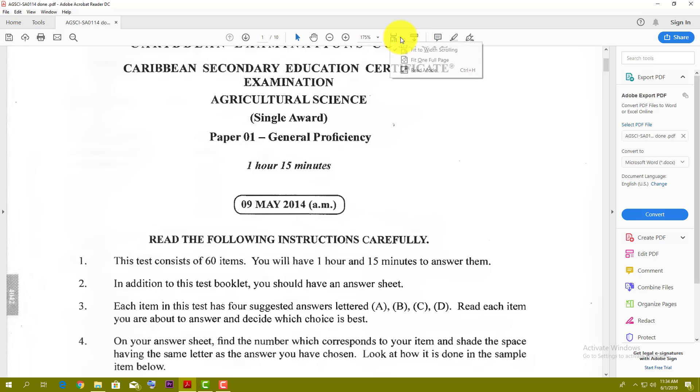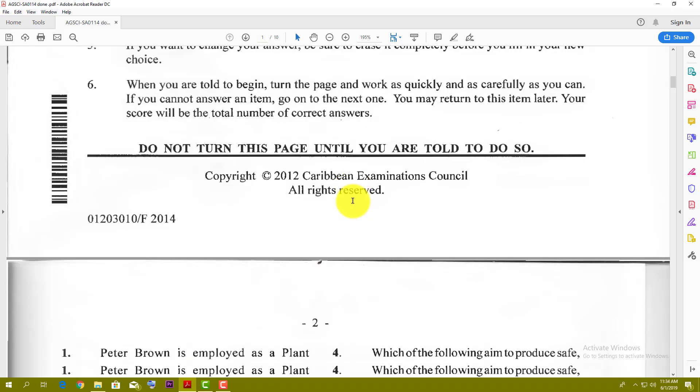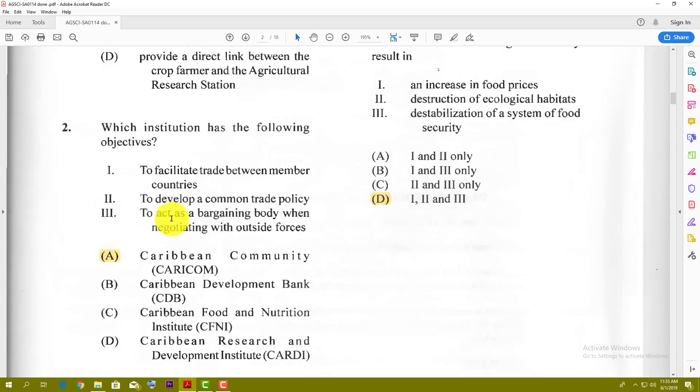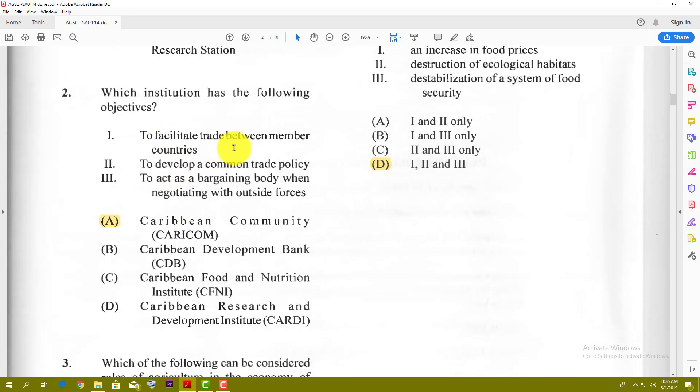Number 1 says Peter Brown is employed as a plant quarantine officer in the Ministry of Agriculture. His role is most likely to inspect plants being imported and exported. Which institution has the following objectives: facilitate trade between member states, develop common trade policy, act as a bargaining body when negotiating with outside forces? The best answer here is CARICOM. That's CARICOM's main job.